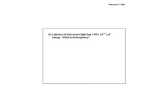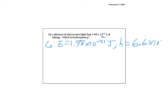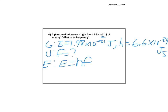The last problem: a photon of microwave light. This should have less energy — we can see it's 10 to the negative 21st, which is much less than negative 18th. What is its frequency? Given: E equals 1.98 times 10 to the negative 21st joules, and H equals 6.6 times 10 to the negative 34th joule-seconds. The unknown is frequency. The equation E equals HF needs to be solved for F, so divide both sides by H.